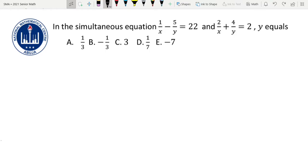Hey guys, welcome to today's problem-solving session. Today we are solving a simultaneous equation from 2021 Senior Maths Olympiad first round. This was problem one in the test. We were told to solve for y, and we're given two equations: 1/x - 5/y = 22 and 2/x + 4/y = 2.